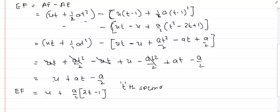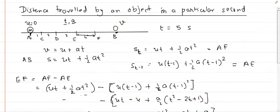So if I want to find the distance covered in the fourth second, I put t equal to 4, along with initial velocity u and acceleration a, into u plus a/2(2t minus 1). This is the formula for finding the distance covered in any particular second. For any other second, you take the same approach. You can use this equation directly without repeating the full derivation. Thank you.